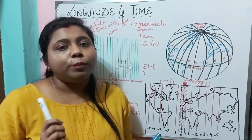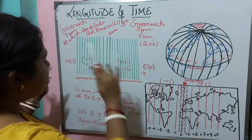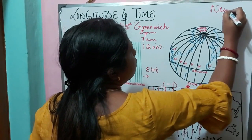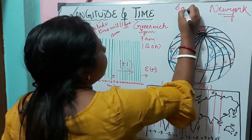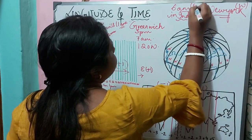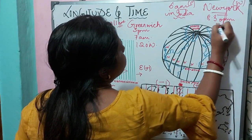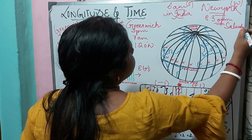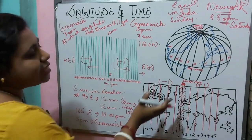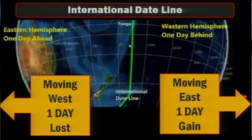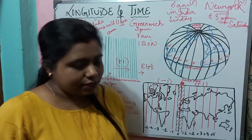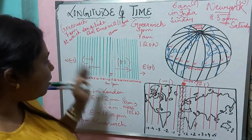I hope all of you understood how to find the time. For example, if it is 6 am in the morning in India, what will be the time in New York? New York is located in the west and India is located in the east. It will be 8:30 pm in New York and it is Saturday, while here in India it is Sunday. As we move towards the east one day is added, and as we move towards the west we lose one day.